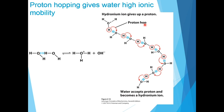When protons move through hydrogen-bonded water molecules, they can cover long distances in remarkably short times. Hydroxide ions also move rapidly by proton hopping, but in the opposite direction. As a result of this high ionic mobility of protons, acid-base reactions in aqueous solutions are exceptionally fast.